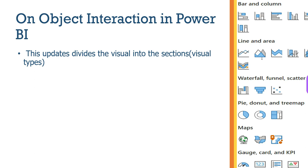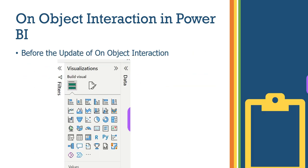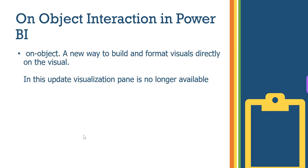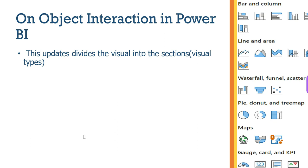The visuals are developed into separate sections — line and area chart visuals, bar and column chart visuals, pie chart, and map. The visuals are separate and use the same on-object interaction approach.